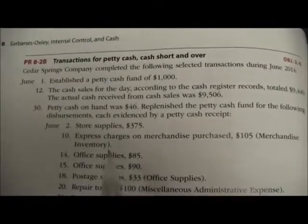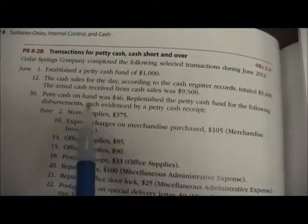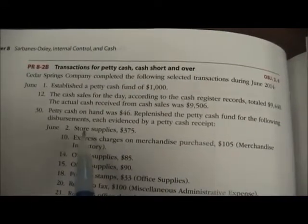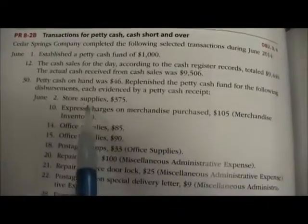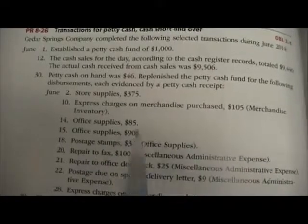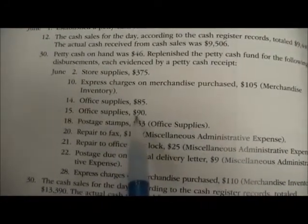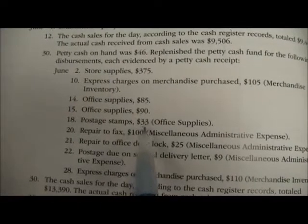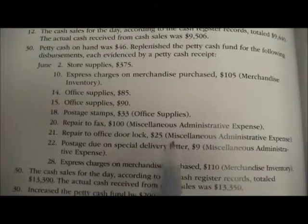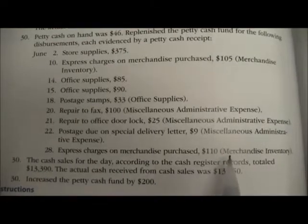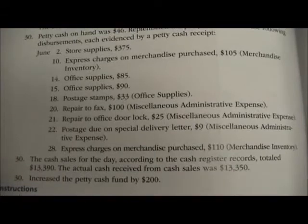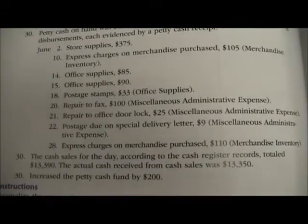Our next transaction was on June 30th. Petty cash on hand was $46. Replenish the petty cash fund for the following disbursements, each evidenced by a petty cash receipt: store supplies $375, merchandise inventory $105, office supplies $85, office supplies $90, office supplies $33, miscellaneous administrative expenses $100, $25, and $9, and merchandise inventory $110. We're going to add all like amounts together to do our journal entry.